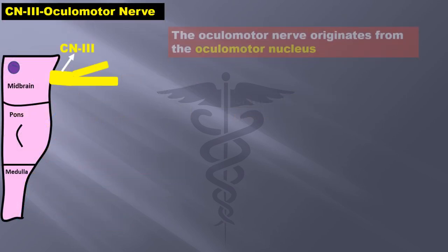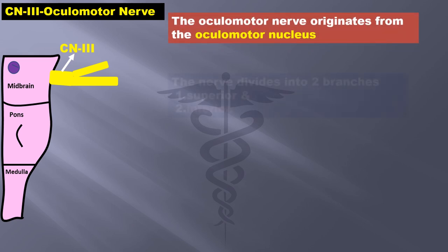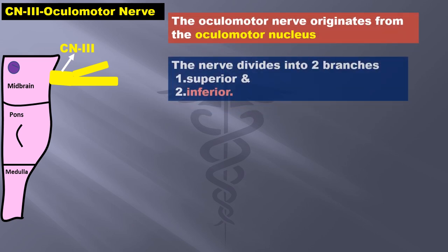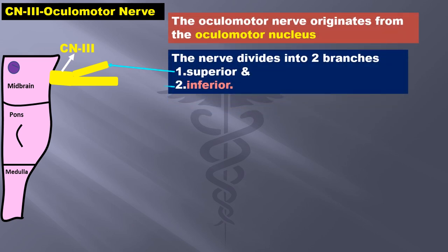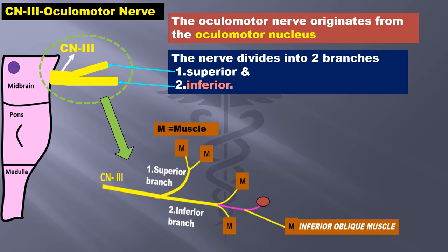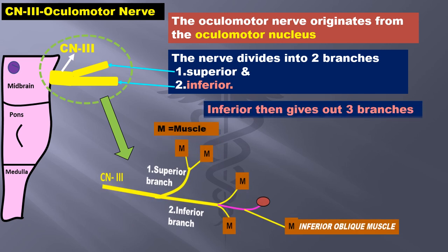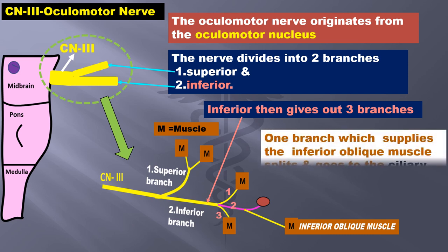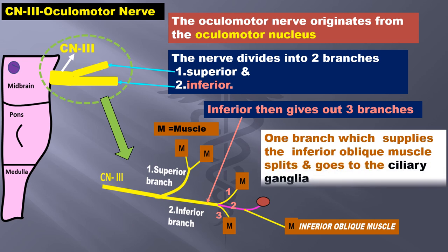The oculomotor nerve originates from the oculomotor nucleus and divides into two branches: the superior and inferior branches. All of them branch further and provide supply to muscles. Note that the inferior division gives out three branches. One of the branches, which supplies the inferior oblique muscle, splits and enters the ciliary ganglia. With this background, let us now learn about each of the roots of the ganglia.